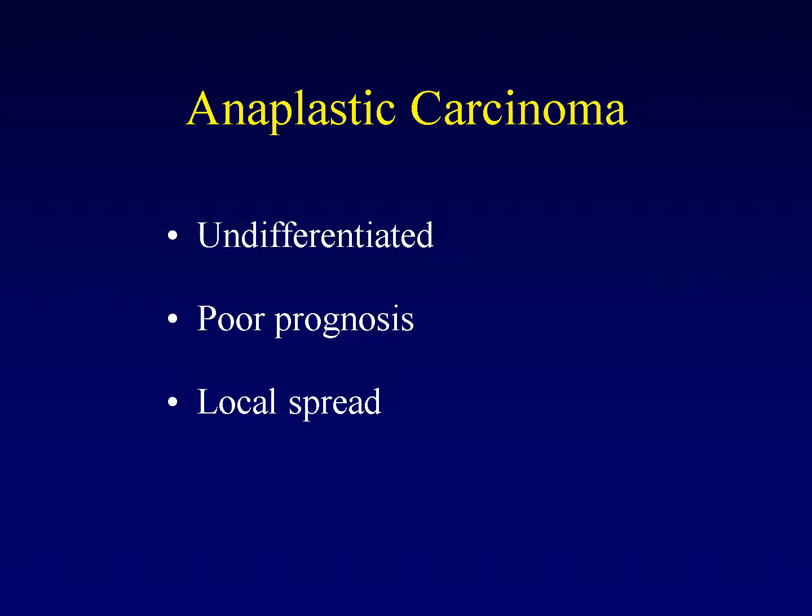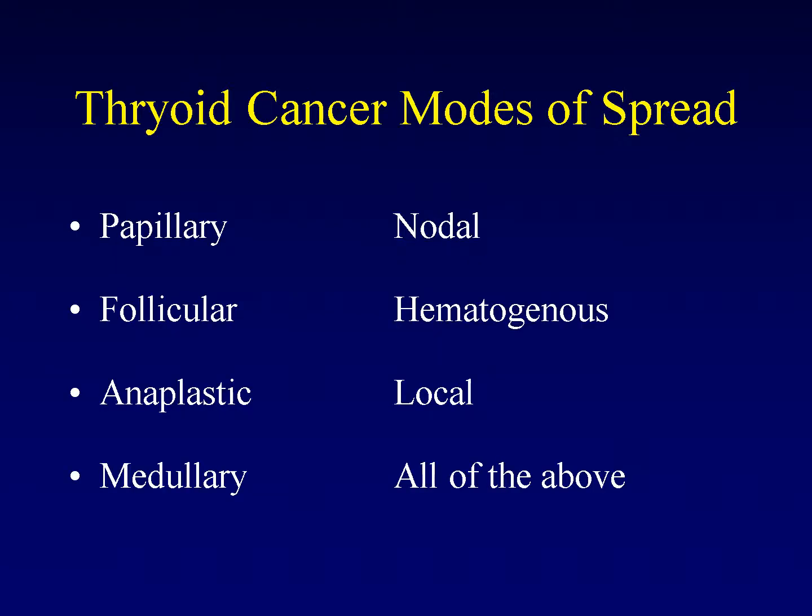Anaplastic thyroid carcinoma is the undifferentiated form. Some pathologists differentiate between undifferentiated and anaplastic carcinomas, but both have poor overall prognoses measured in months. Anaplastic carcinoma tends to spread with local invasion rather than hematogenous or lymphatic spread. To summarize: papillary tends to spread to lymph nodes; follicular tends to spread hematogenously, particularly to lung and bone; anaplastic tends to invade locally; and medullary can do any of the above.